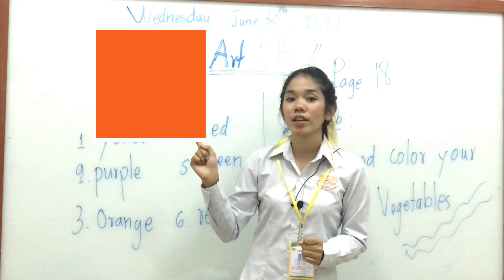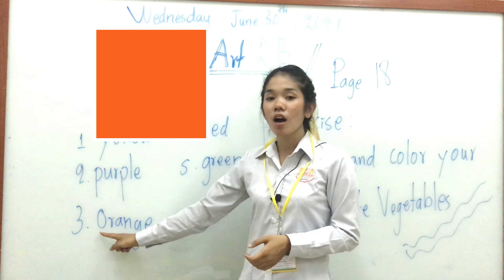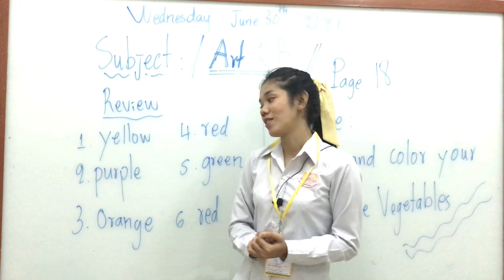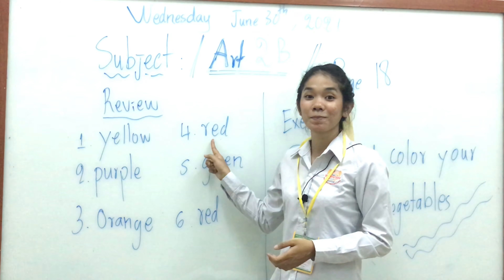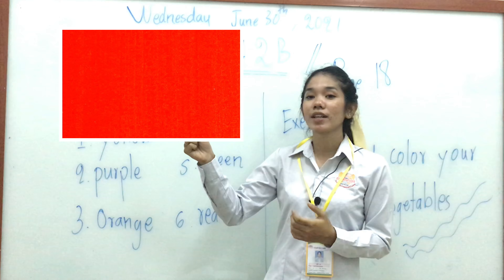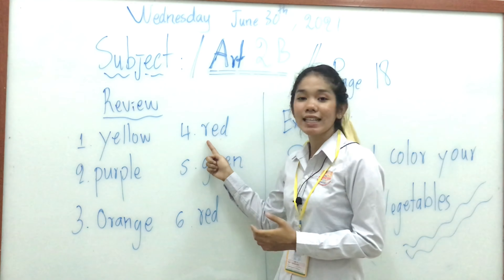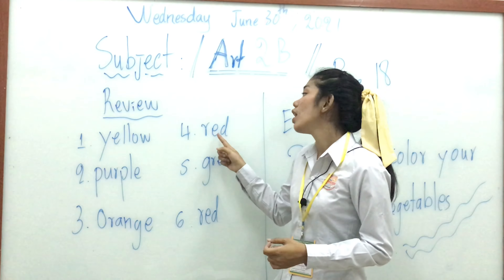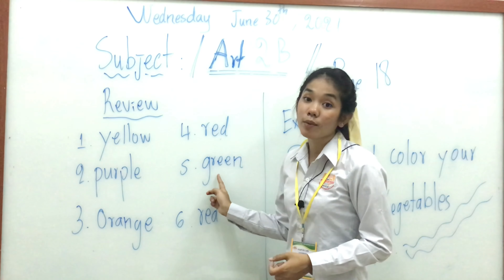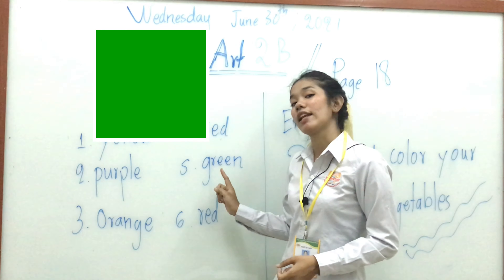Orange, orange. And this one is red. Let's spell red everyone: R-E-D. Red. And this one is green: G-R-E-E-N. Green.